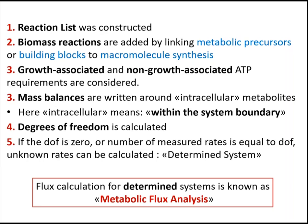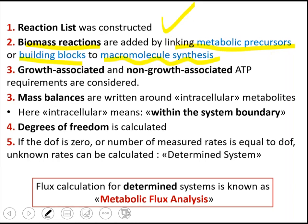First, we construct a reaction list. This reaction list has to have a biomass reaction by linking metabolic precursors or building blocks to macromolecular synthesis. Growth associated and non-growth associated ATP requirements should also be considered.